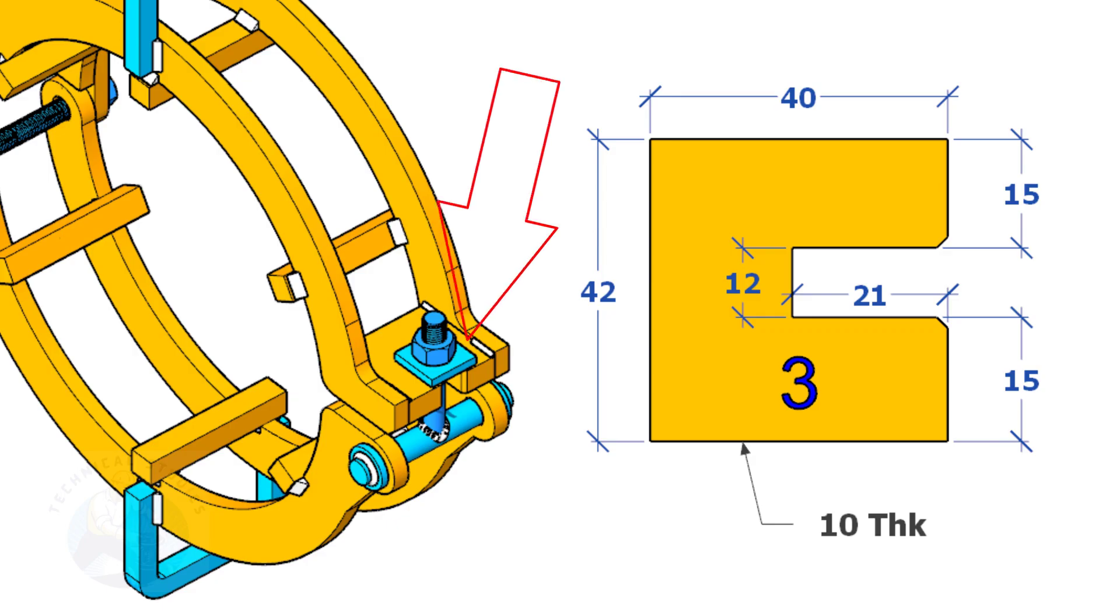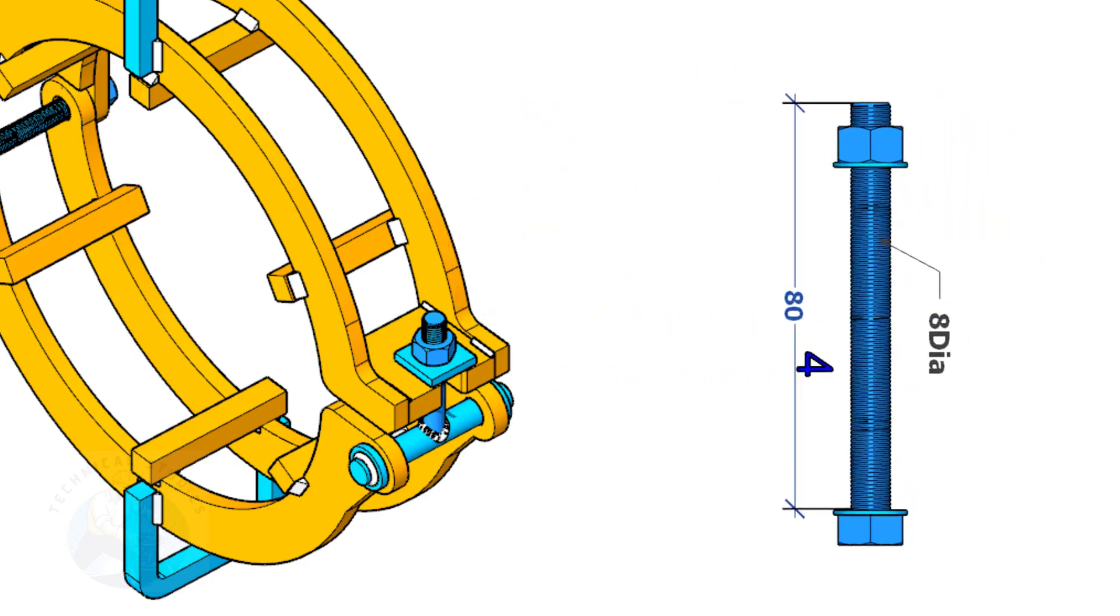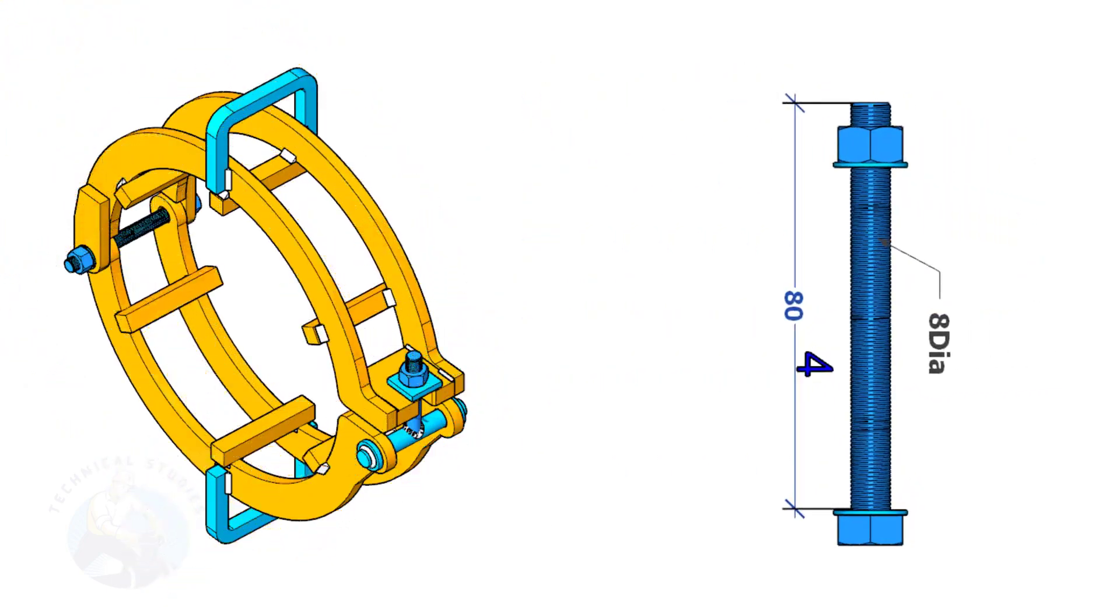Item number three sits here. Item number four is a bolt. You can use a stud bolt, or a round bar of the same size with stoppers tack welded on both ends of the rod after full assembly.